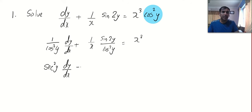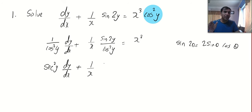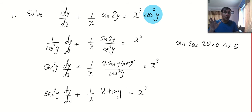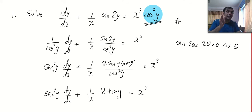Now let's simplify. 1/cos²y is sec²y, so we get sec²y·dy/dx. For sin 2y, remember the formula: sin 2θ = 2 sin θ cos θ. So sin 2y / cos²y = 2 sin y cos y / cos²y = 2 sin y / cos y = 2 tan y. We end up with sec²y·dy/dx + (2/x)·tan y = x³. The procedure: divide by the function in y on the right-hand side, then simplify.